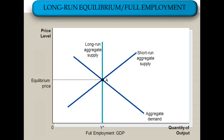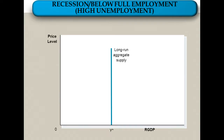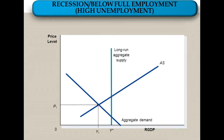This is long-run equilibrium and full employment. Now, we also learned that sometimes we deviate from that. We end up with what's known as a recession. That occurs when our aggregate demand curve is too far to the left — we do not have enough demand for goods and services. In that case, price levels are low, but so is our GDP. Y-1 is less than Y-star, and therefore high unemployment is the problem here. This is caused by a decrease in aggregate demand.